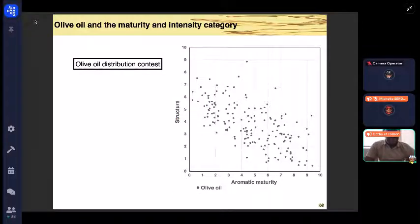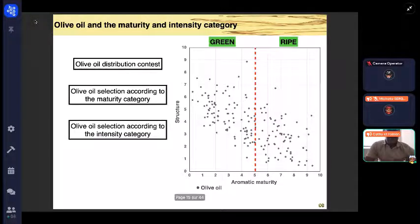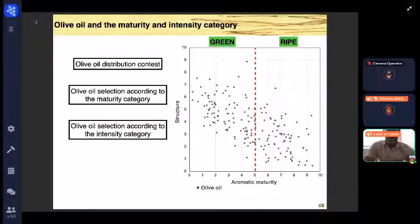From this 2D representation, we can divide olive oils into two categories with the maturity score: green maturity and ripe maturity. Each of these categories will be divided according to intensity, using the structure score.